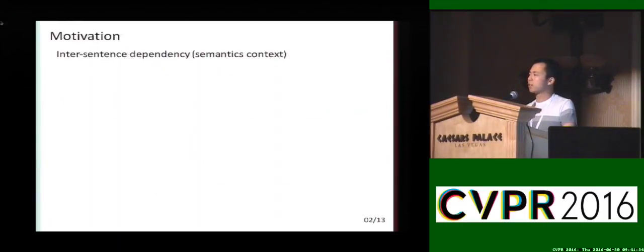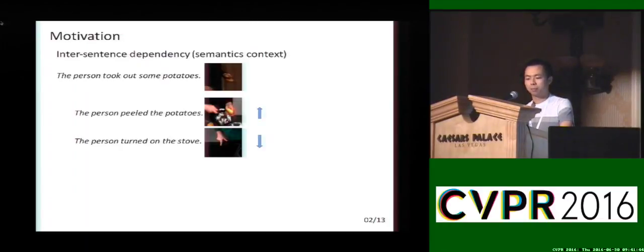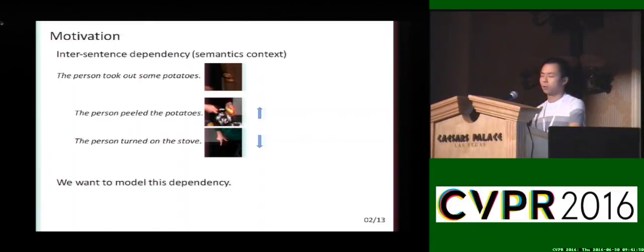We know that sentences are not independent — there is semantic context. If I have generated a sentence like 'the person took out some potatoes,' the next sentence would be more likely to be 'the person peeled the potatoes' instead of 'the person turned on a stove.' So we want to model this dependency.